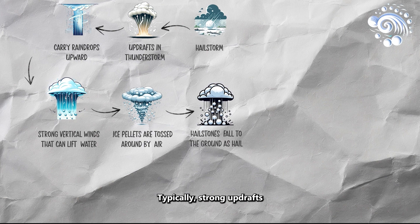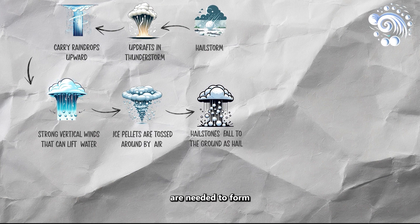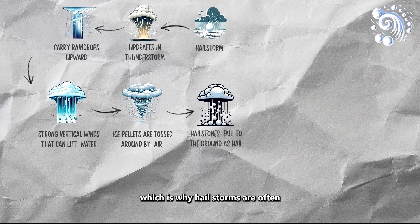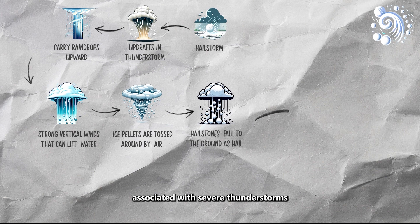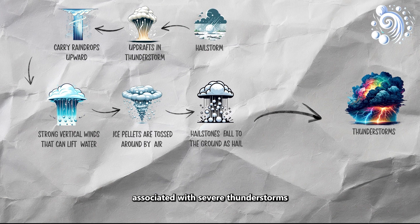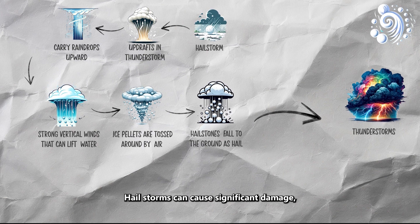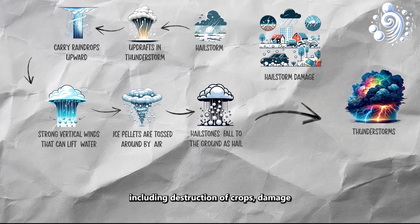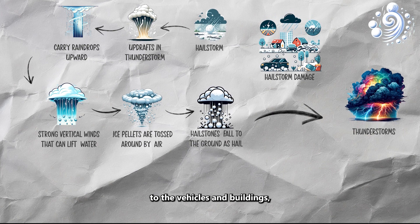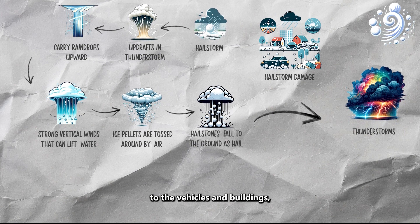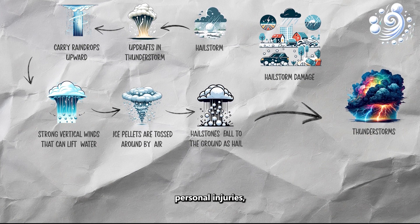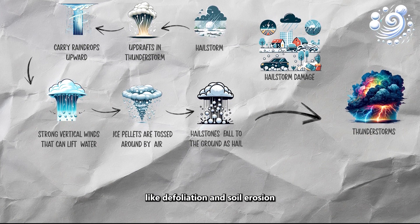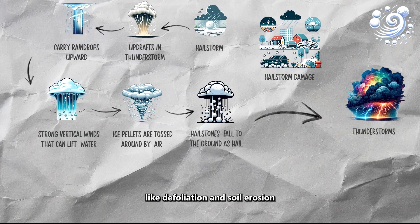Typically, strong updrafts are needed to form larger hailstones, which is why hailstorms are often associated with severe thunderstorms. Hailstorms can cause significant damage including destruction of crops, damage to vehicles and buildings, personal injuries, and environmental impacts like defoliation and soil erosion.